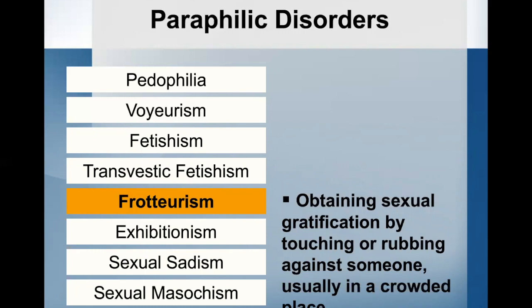Frotteurism is perhaps the most memorable disorder to discuss, because you will forever wonder if you've experienced it. For six months, they've had recurrent and intense sexual arousal from touching or rubbing against a non-consenting person, as manifested by their fantasies, urges, or behaviors. The individual has acted on these sexual urges with a non-consenting person, or the sexual urges and fantasies cause them clinically significant distress or impairment. Note that if they have actually acted on this, it means they have involved someone who did not consent to this sexual behavior, and that automatically counts for Criterion B.